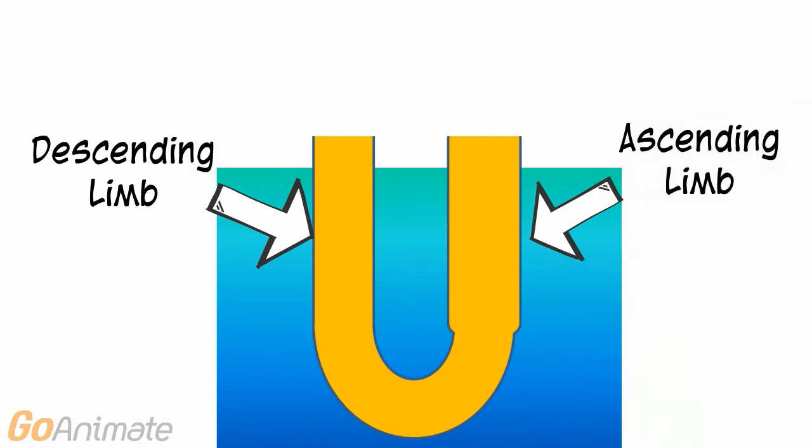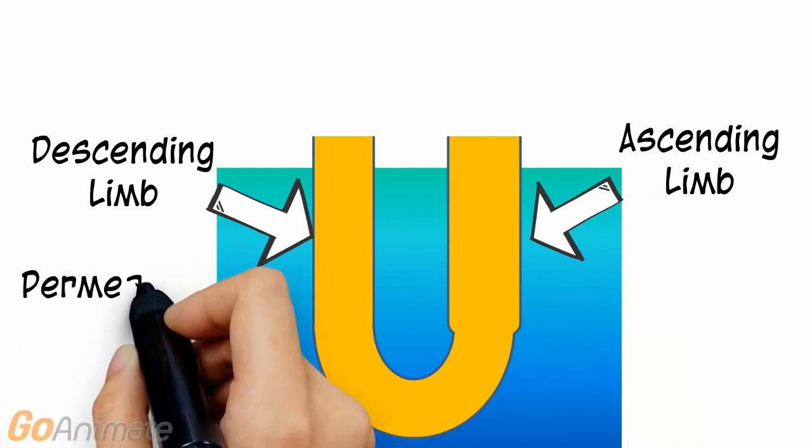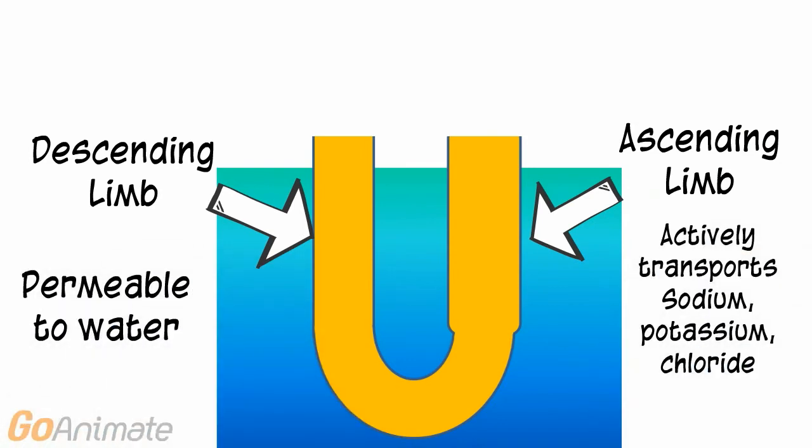The Nephron Loop contains a descending limb, sometimes called the thin segment, and an ascending limb, sometimes called the thick segment. The descending limb is permeable to water.